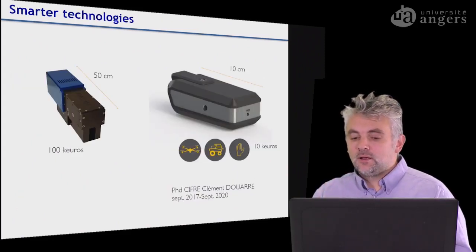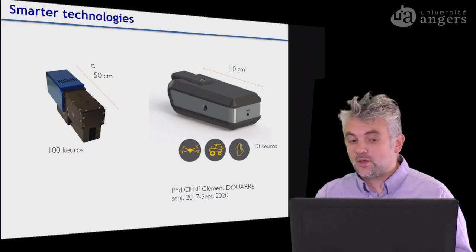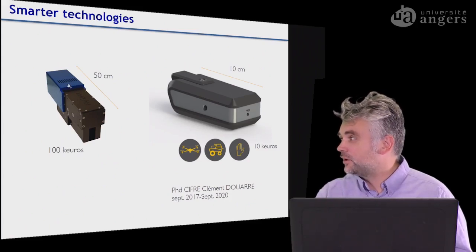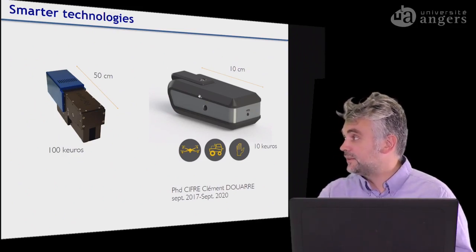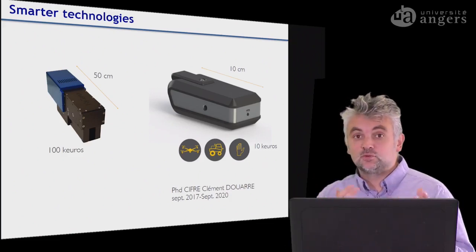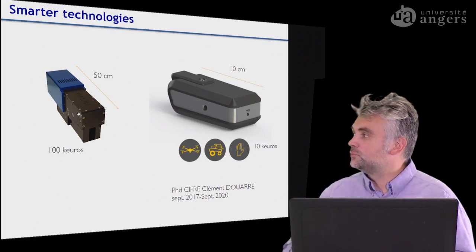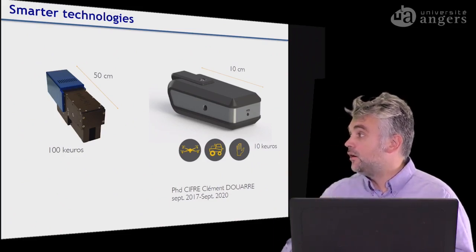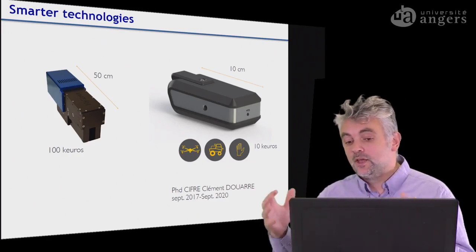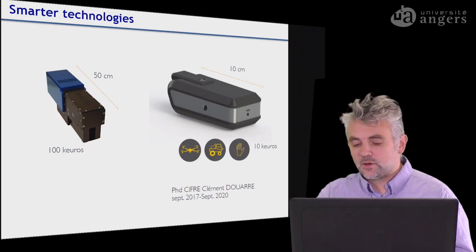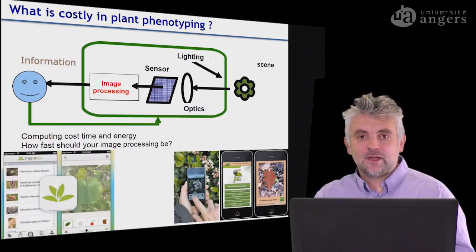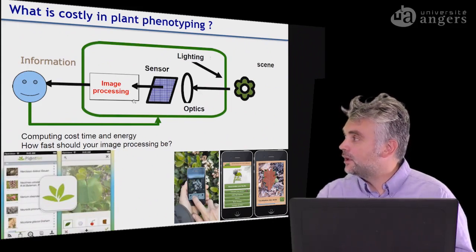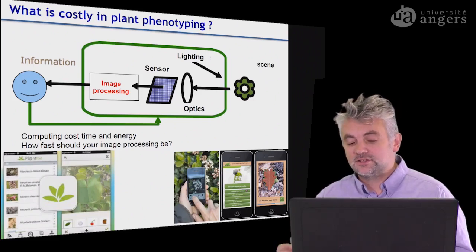We also have smarter technologies. This is a comparison of a hyperspectral imaging system that weighs several kilos versus one that is only a few hundred grams, with reduced dimensions and a price factor of 10. It is now possible to do hyperspectral imaging in a much more compact way. These technologies used to be embedded in aeroplanes or satellites, and now we need to rethink how they work to make something much smaller for field use. We'll take a break here and see you in the next video, where we will look at the impact of image processing on the price of the imaging system.